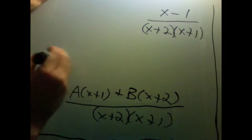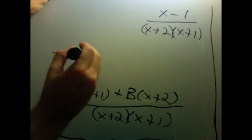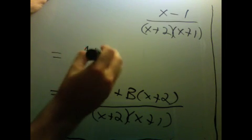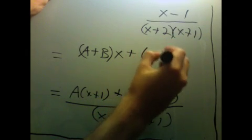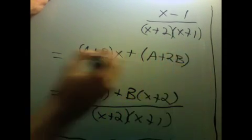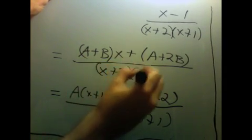So what we have is x plus 2 times x plus 1 on the bottom. So now combining the top, combining the terms, the coefficient of x, we get a plus b times x plus a plus 2b divided by x plus 2 times x plus 1.